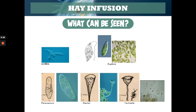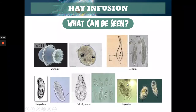What types of protozoa can be seen? Here are some pictures. You have first the amoeba, then euglena which is a flagellate — as you can see, it has a flagellum. You have paramecium which is a ciliate. You have stentor and vorticella which are also ciliates. Another one — didinium, which is a ciliate. Lyonotus, a ciliate; colpidium, a ciliate; tetrahymena, a ciliate; and euplotes, which I think is a rotifer.